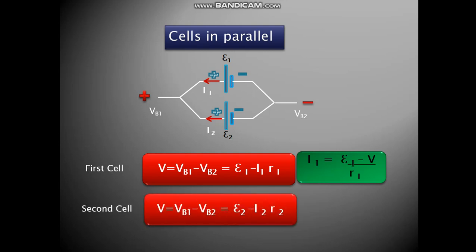For the second cell, again we have the potential difference as V. That is equal to V1 minus V2, which is equal to E2 minus I2 R2. So if we rearrange the terms, I2 is equal to E2 minus V upon R2.